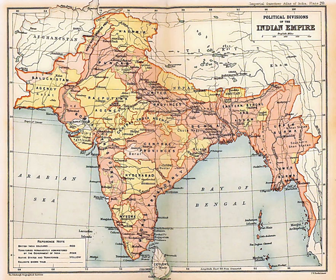The partition involved the division of three provinces — Assam, Bengal, and Punjab — based on district-wide Hindu or Muslim majorities. The boundary demarcating India and Pakistan came to be known as the Radcliffe Line. It also involved the division of the British Indian Army, the Royal Indian Navy, the Indian Civil Service, the Railways, and the Central Treasury between the two new dominions.